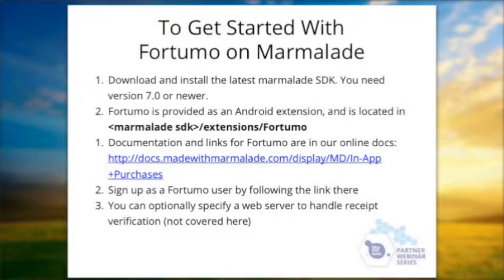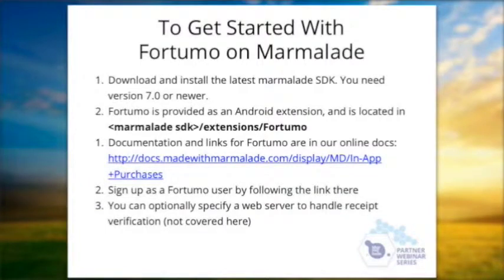To get started with Fortumo in Marmalade, download the latest SDK. Fortumo has been bundled in Marmalade since version 7, but we're on 7.1 at the moment so I'd recommend upgrading. Inside the SDK there is a folder of extensions and Fortumo is right there at the root. To add Fortumo to an application, you basically just have to do a subproject Fortumo. The documentation and links to Fortumo are all on our website, with an in-app purchases docs page listing Fortumo as the featured partner.